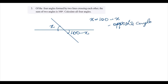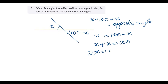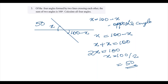So x plus x equals 100, giving 2x equals 100, and x equals 50 degrees. Marking the diagram: x equals 50 degrees, so this angle is 50 degrees. The remaining angle is 180 minus 50, which is 130 degrees. The four angles are 50°, 130°, 50°, and 130°.